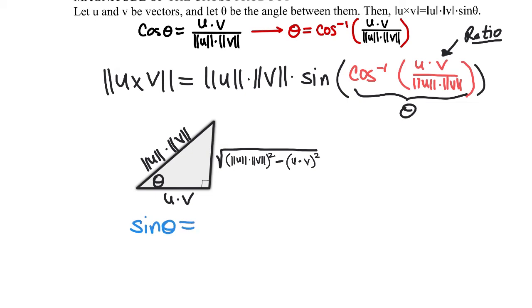The sine of theta would be the opposite side divided by the hypotenuse. That gives us a new ratio for the sine function.